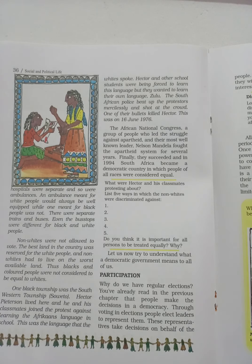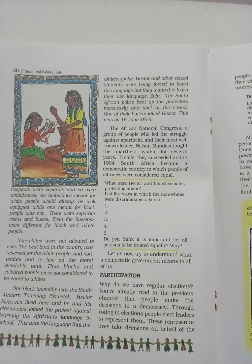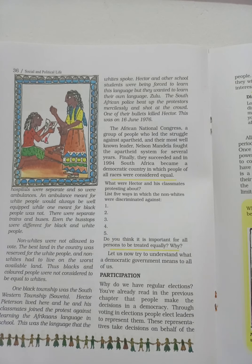All governments are elected for fixed periods. In India, this period is five years — one elected government can stay in power only for that period. If they want to continue in power, they have to be re-elected by the people. This is the moment when people can sense their power in a democracy. In this way, the power of the government gets limited by regular elections. After five years, the election happens again and people choose their representatives to form the government.